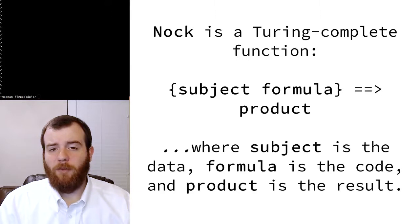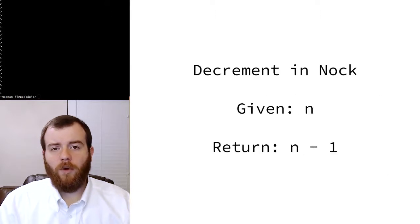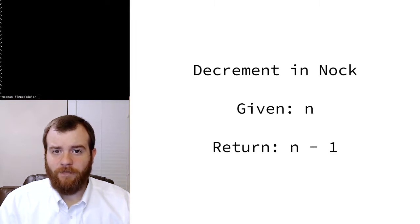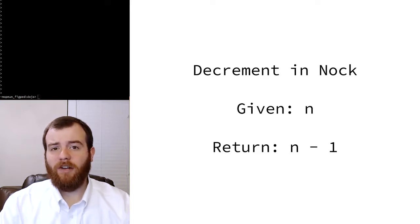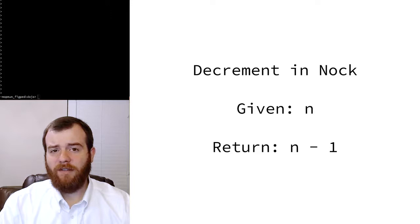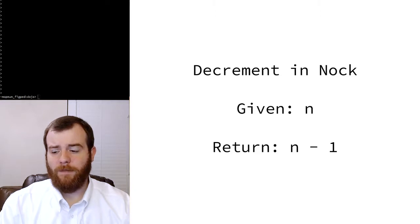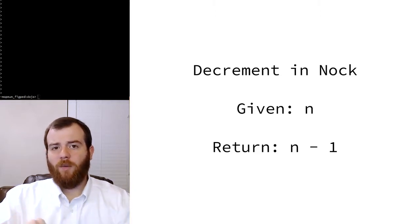Today we're going to do something a little bit more ambitious. We're going to construct a NOC formula that carries out the decrement function. This function takes some number n and returns n minus 1. It might not seem like much, but remember that NOC is very simple — it has an increment function and a test for equality, but nothing else that directly bears on arithmetic. So it's actually non-trivial to construct a decrement formula in NOC.